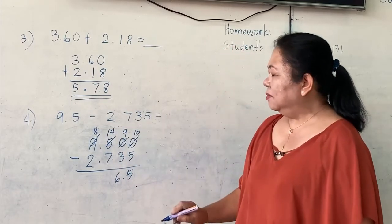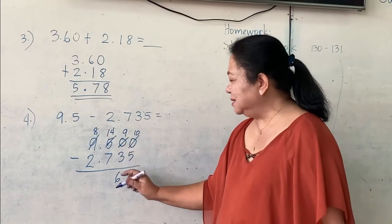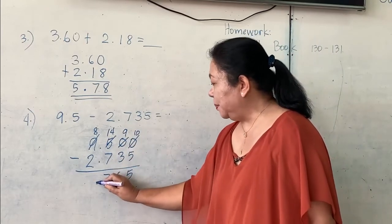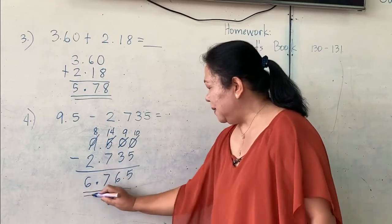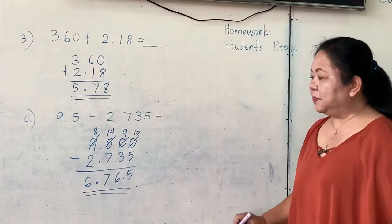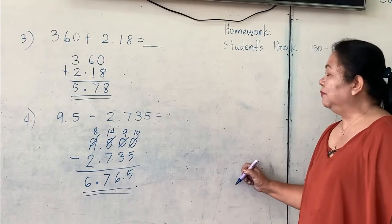9 will become 8. And 4 will become 14. 14 minus 7 is 7. Write the point. 8 minus 2 is 6. So, our answer is 6.765.